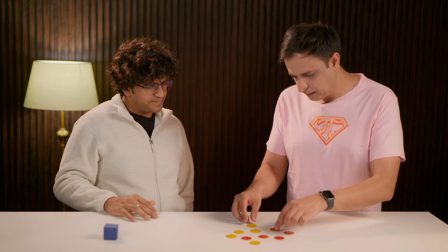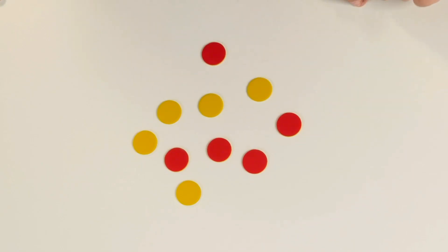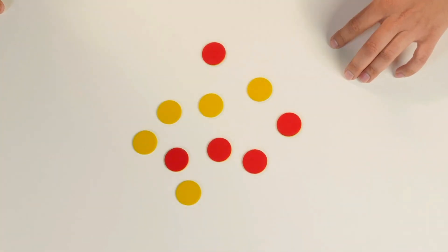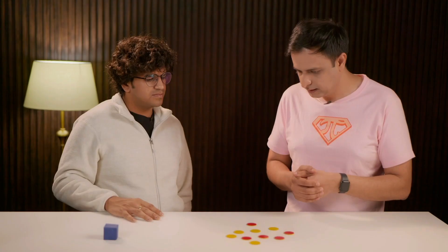If I flip a pair of a yellow and a red coin, then what happens to the number of reds? Stay the same. Exactly. Because red became a yellow and a yellow became a red. Yeah.